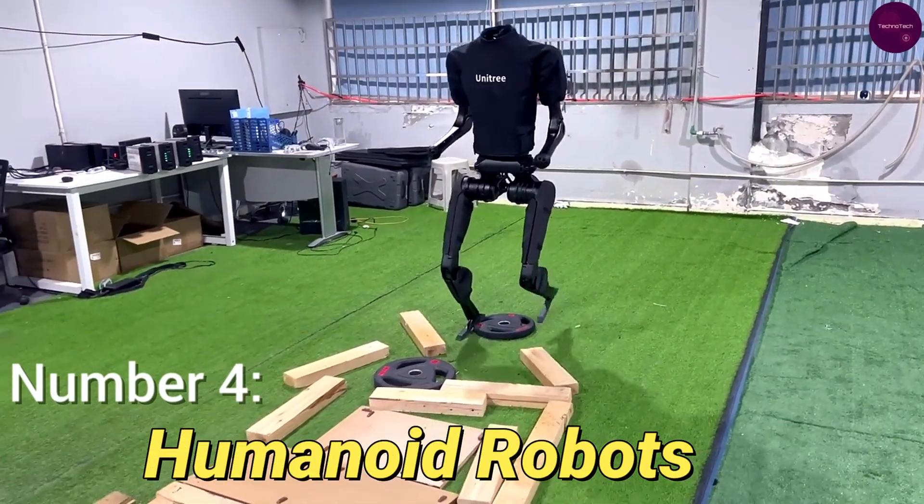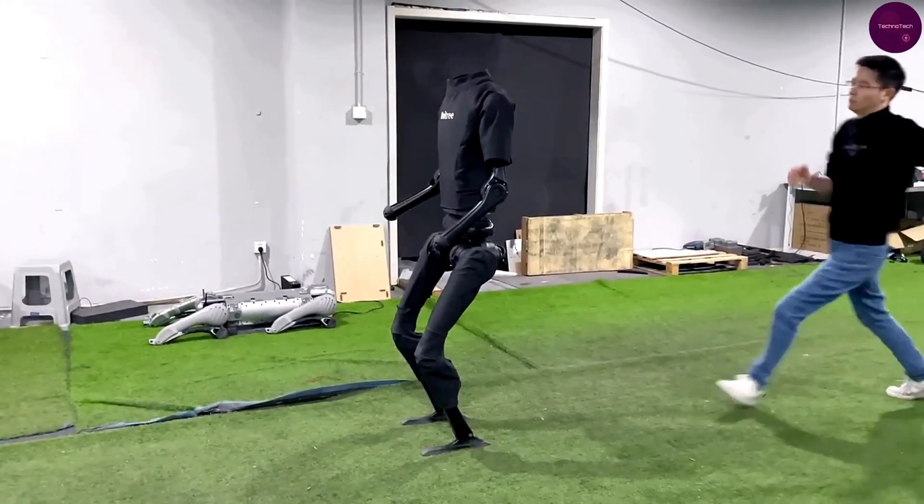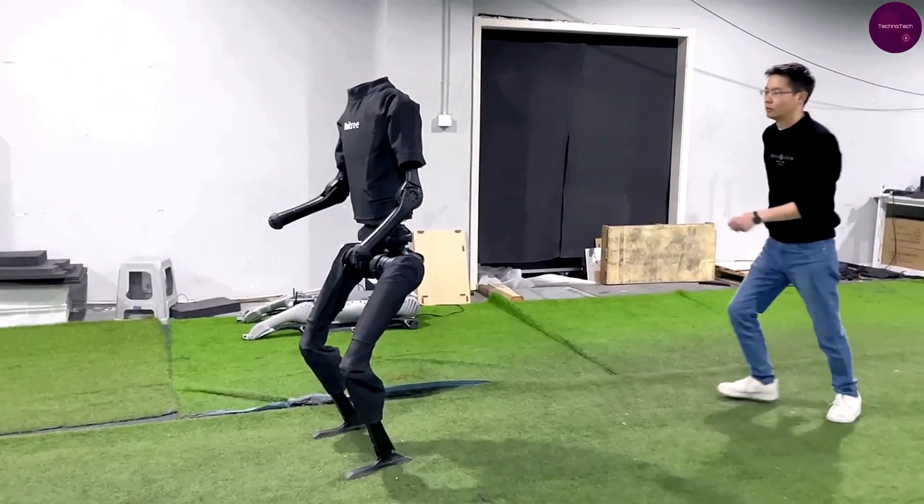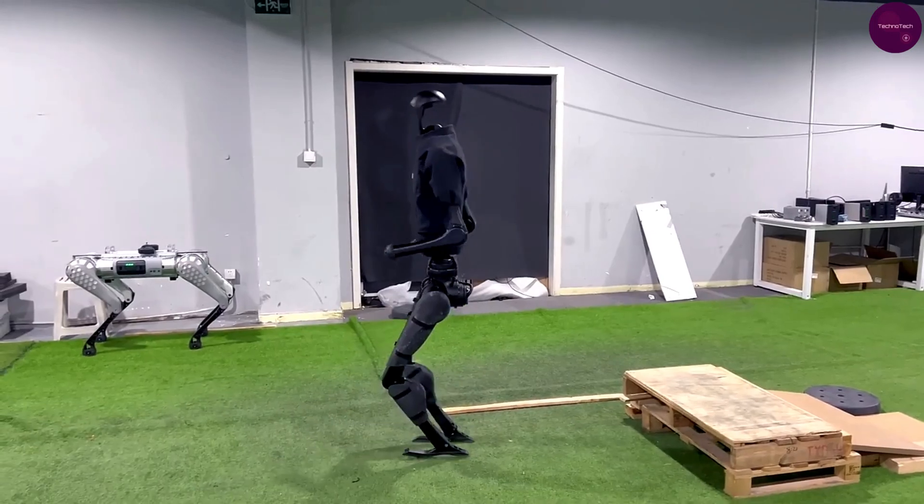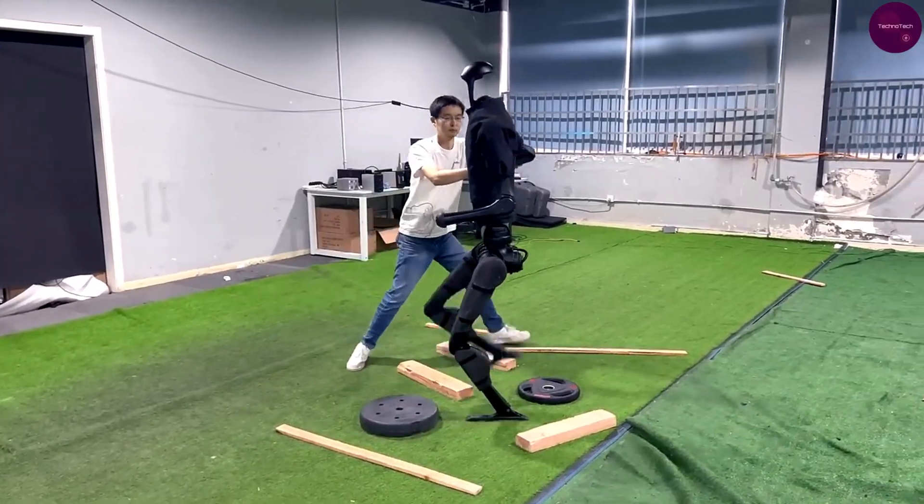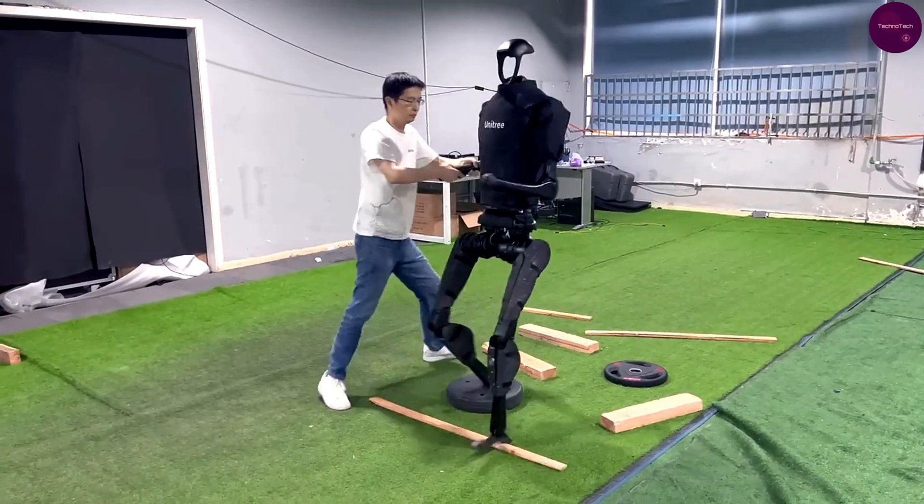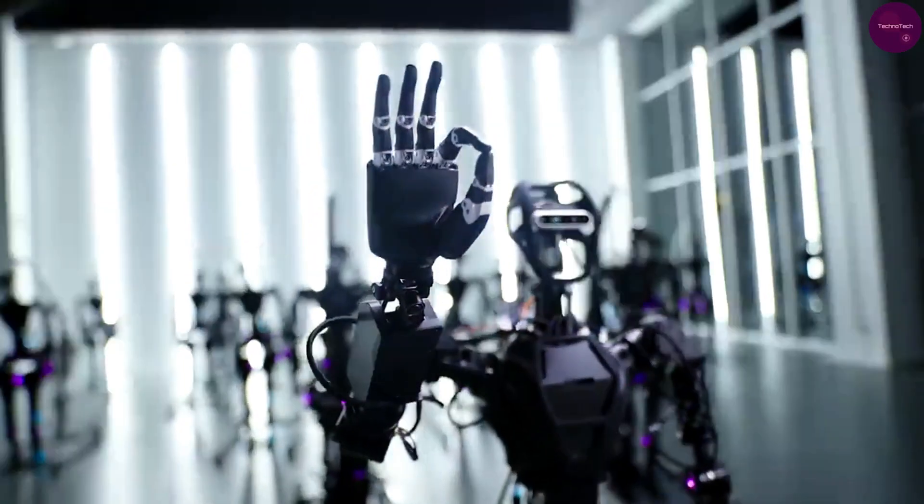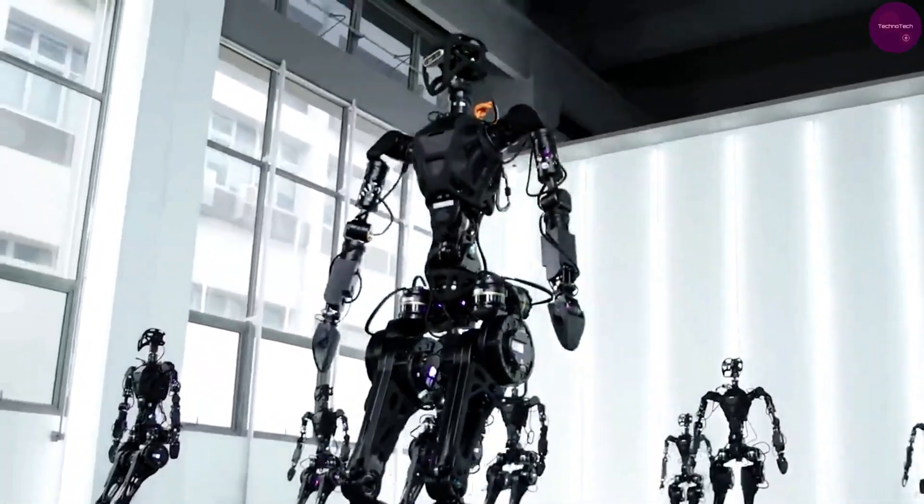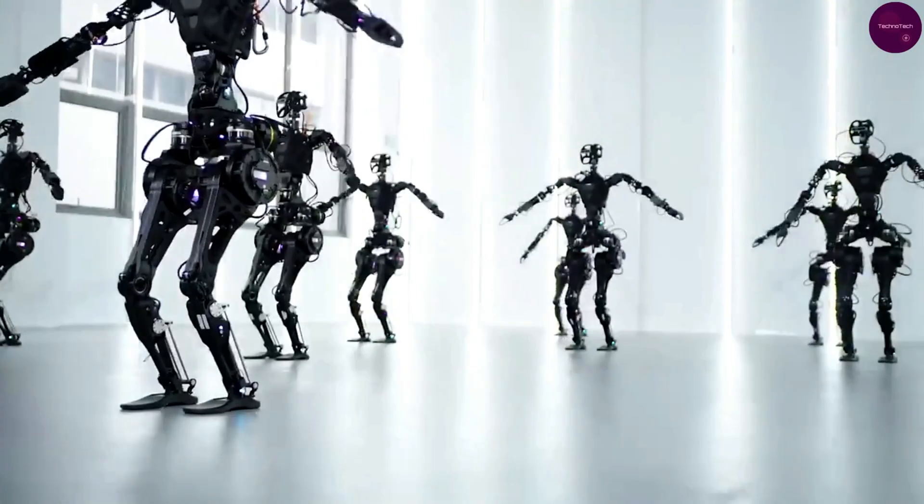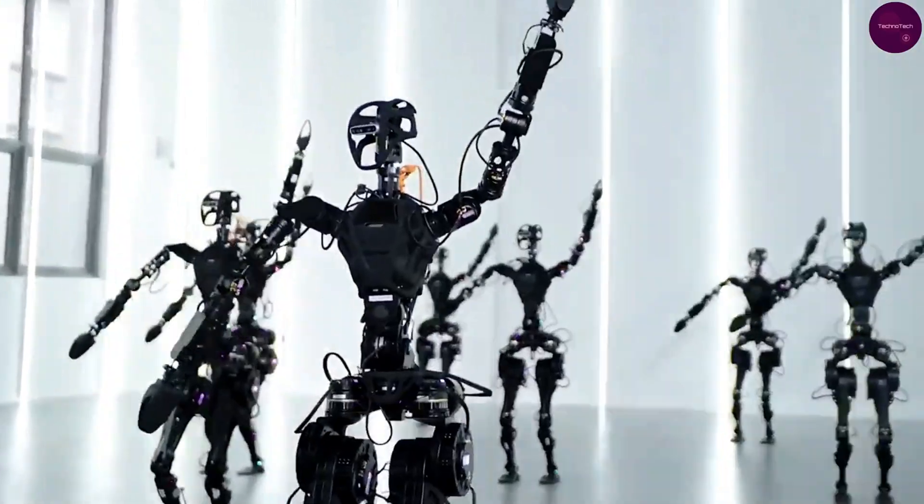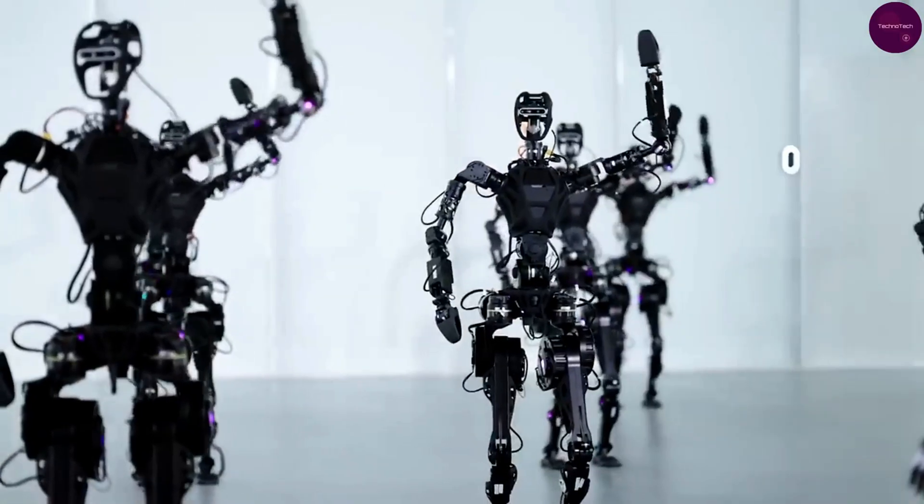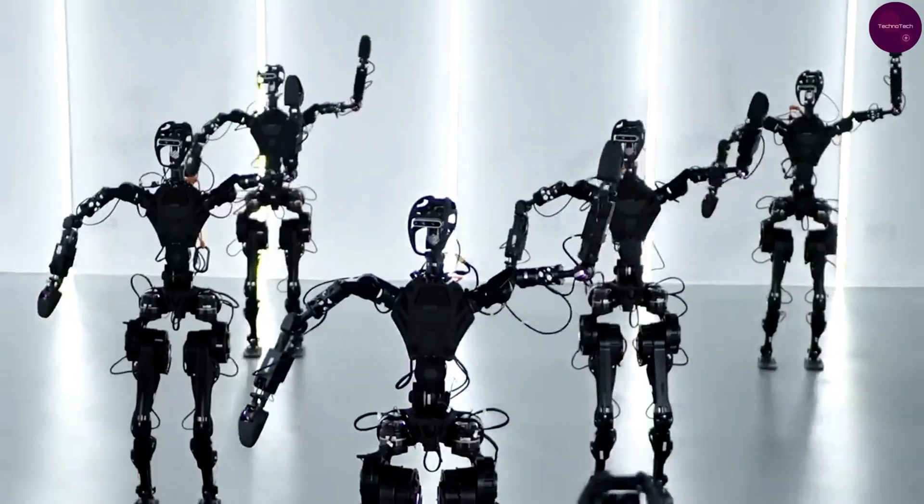Number 4: Humanoid robots. At number 4, we have humanoid robots, machines designed to mimic human behavior and interaction. With advancements in AI and robotics, these humanoid beings are becoming increasingly sophisticated, capable of tasks ranging from patient care to disaster response. But beyond their practical applications, humanoid robots also raise profound questions about the future of work, ethics, and what it means to be human.